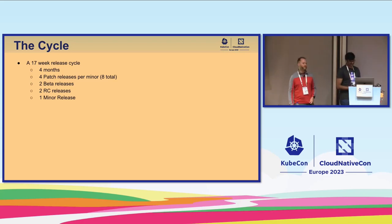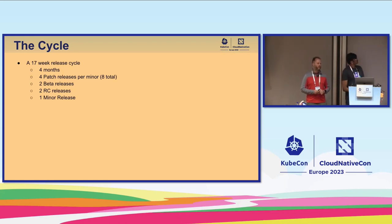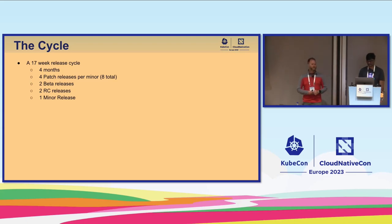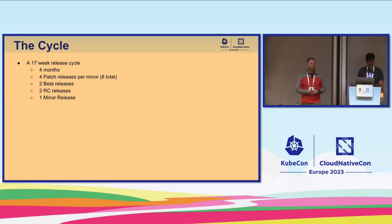Like Yuvaraj said, we looked at the Kubernetes SIG release cycle and mimicked their best practices. We went with a 17-week release cycle, about four months, which is what Kubernetes does as well. We'll cut patch releases at predictable times — four patch releases within the cycle for each minor. We'll also cut two beta releases and two RC releases for the community to test, and at the very end, the minor release itself.